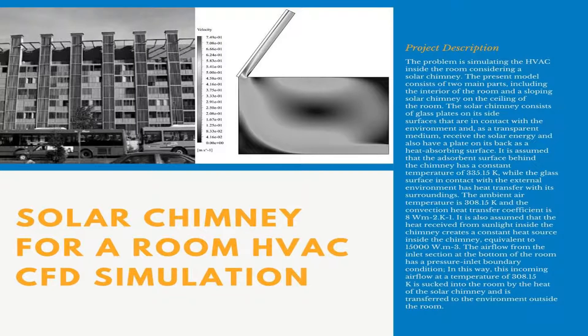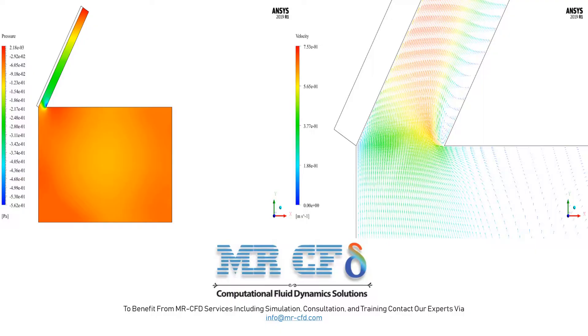Accordingly, we probe a solar chimney for a room HVAC CFD simulation. The problem simulates the HVAC, or heating ventilation and air conditioning, inside a room with a solar chimney. The present model consists of two main parts including the interior of the room and the sloping solar chimney and the ceiling of the room.